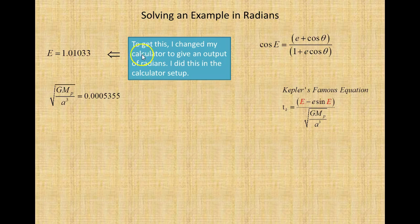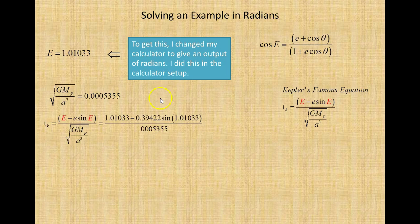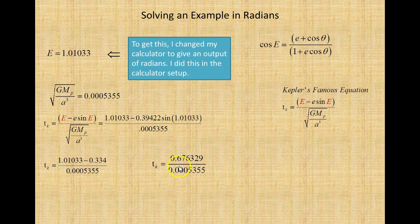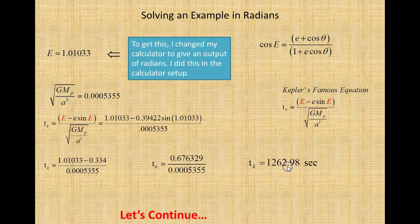Now taking E in radians and plugging it into Kepler's equation — everywhere there is an E, we plug in the radian value. Since the calculator output is in radians, there's nothing to change. Inputting E wherever it appears and computing the top divided by the bottom gives time equals 1,262.98 seconds.